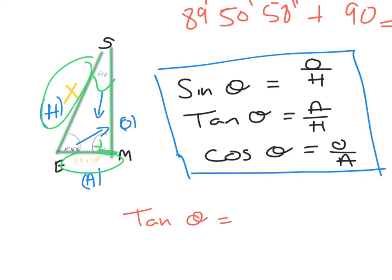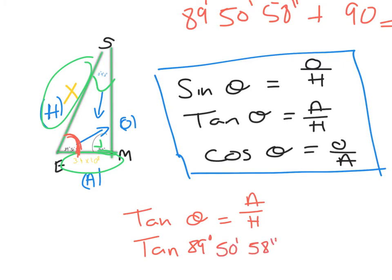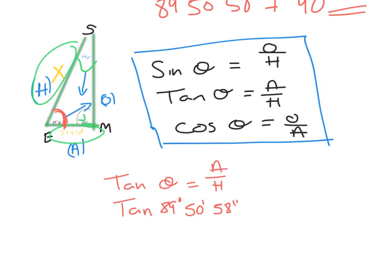Adjacent and hypotenuse — actually I'm using tan of the angle equals adjacent over hypotenuse. The angle I chose is 89 degrees 50 minutes and 58 seconds. It's probably better to use the angle you're given, just in case you made a mistake calculating the other angle. So: tan(89° 50' 58") = 3.4 × 10^8 over x.